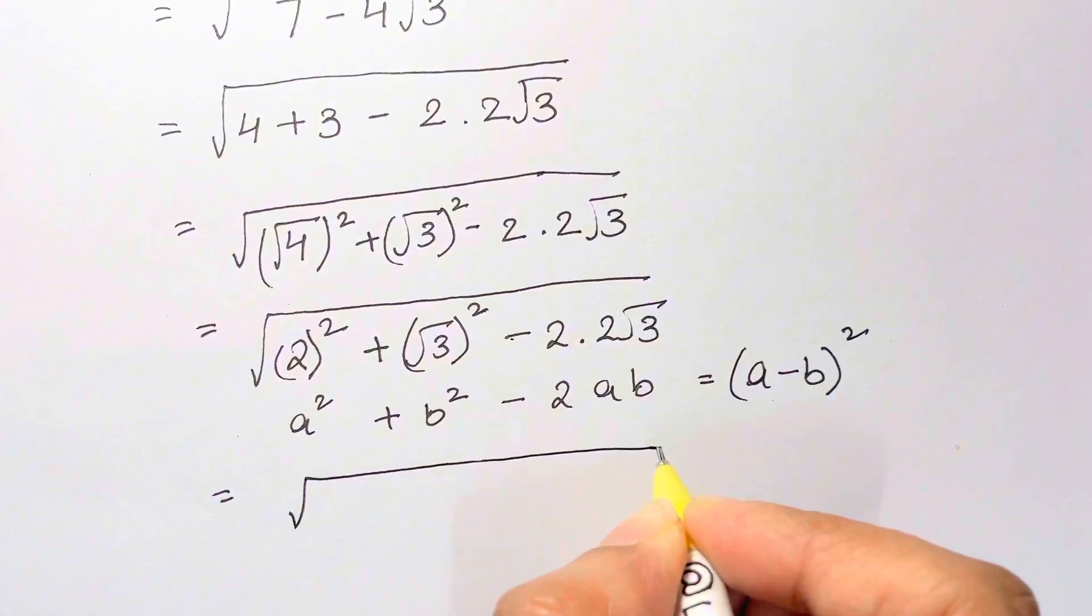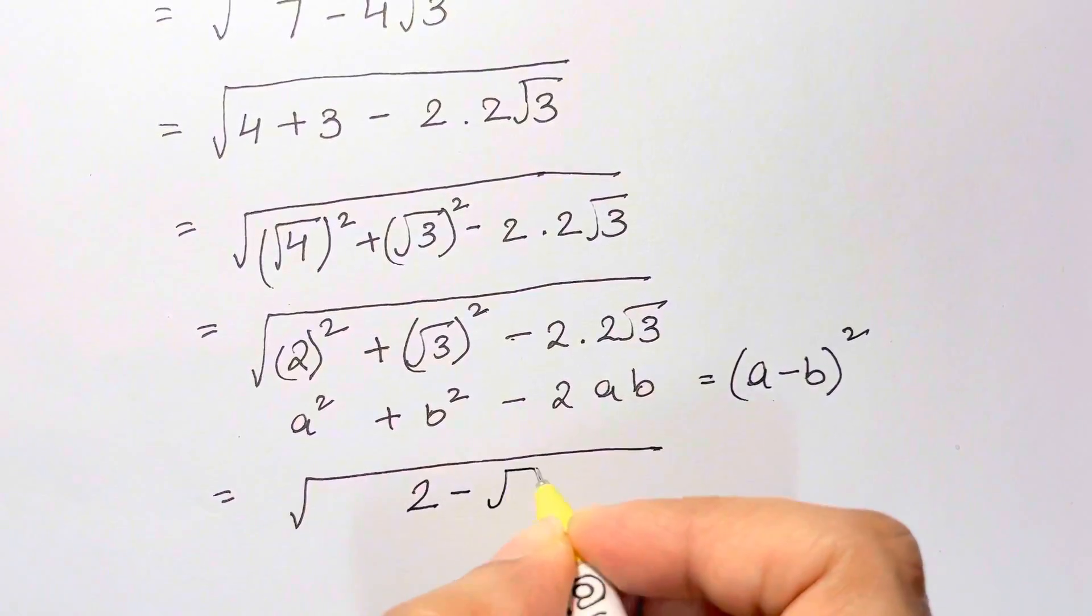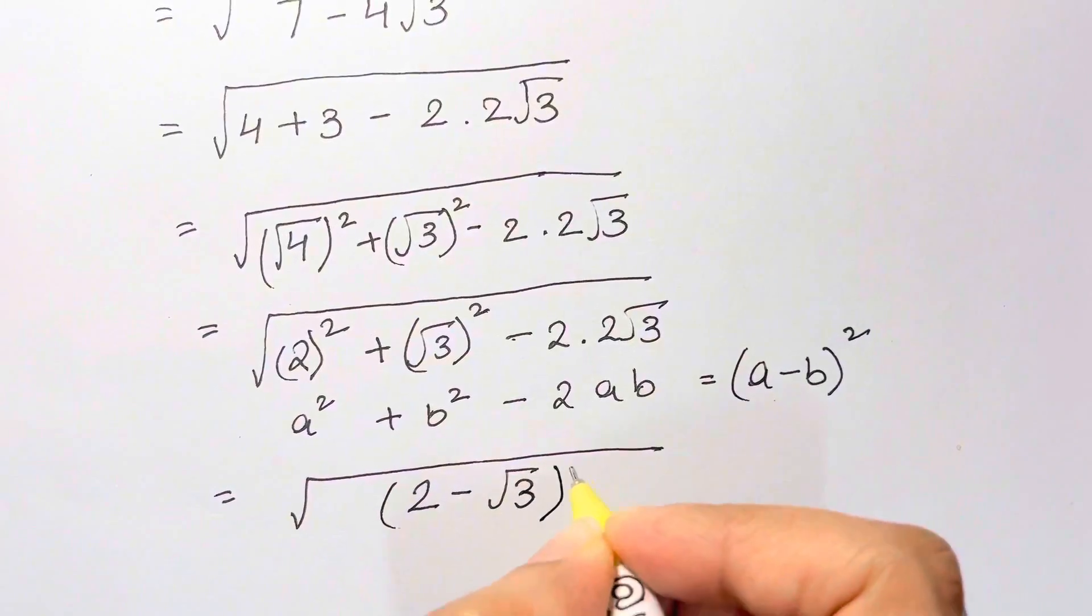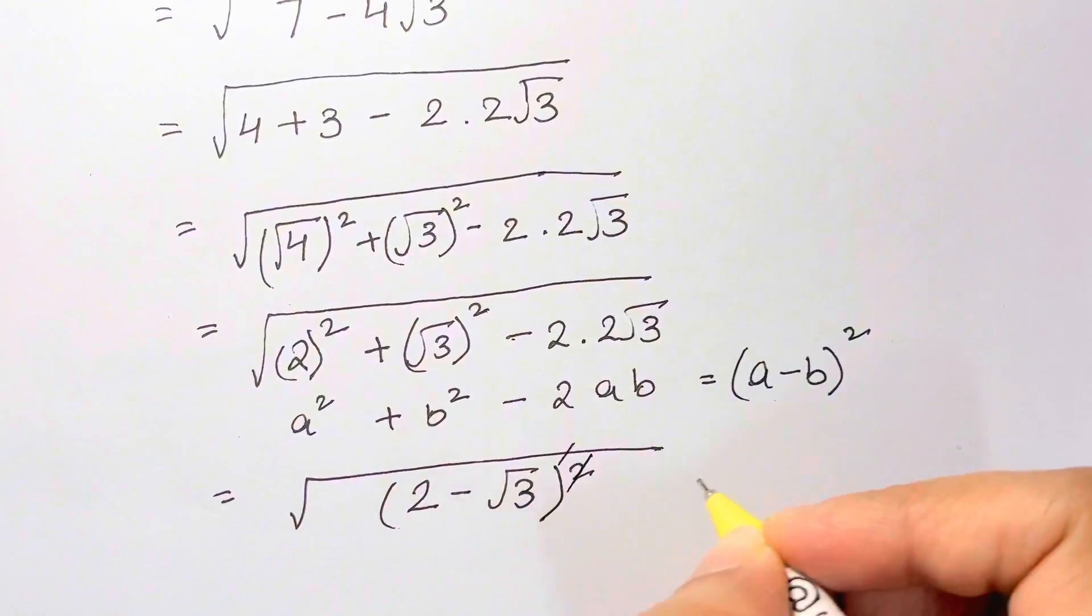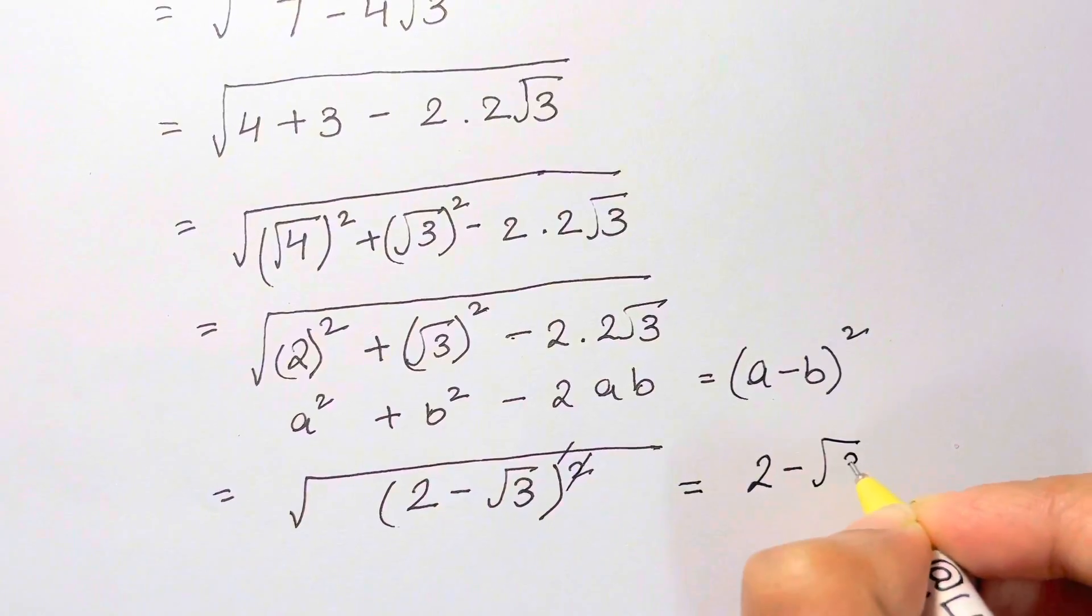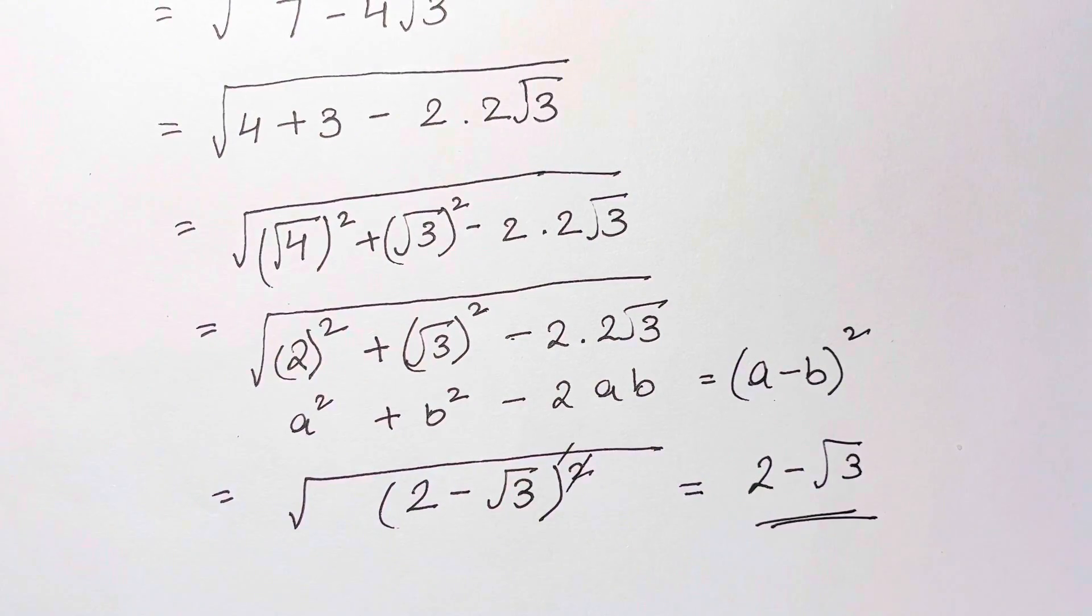So let's write down the values under root of 2 minus root 3 the whole square. Root and square gets cancelled, so your answer is 2 minus root 3. Thank you, bye bye, take care.